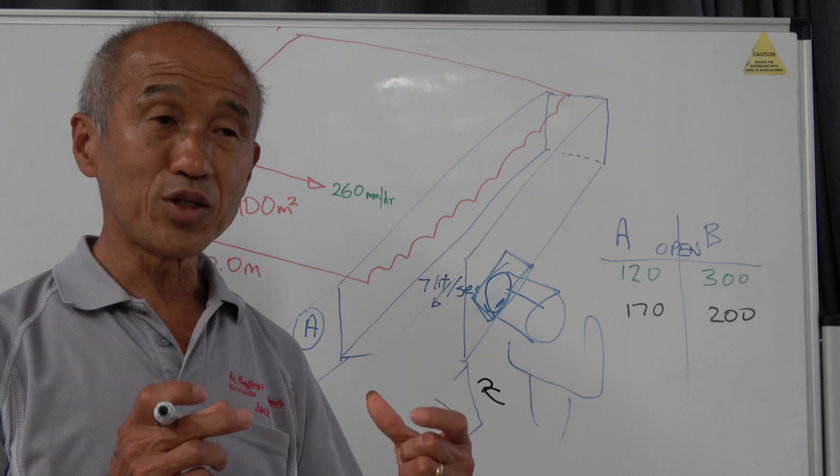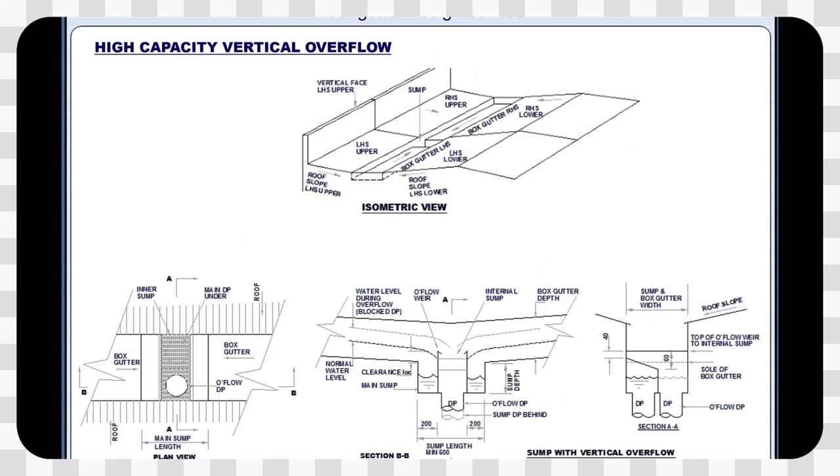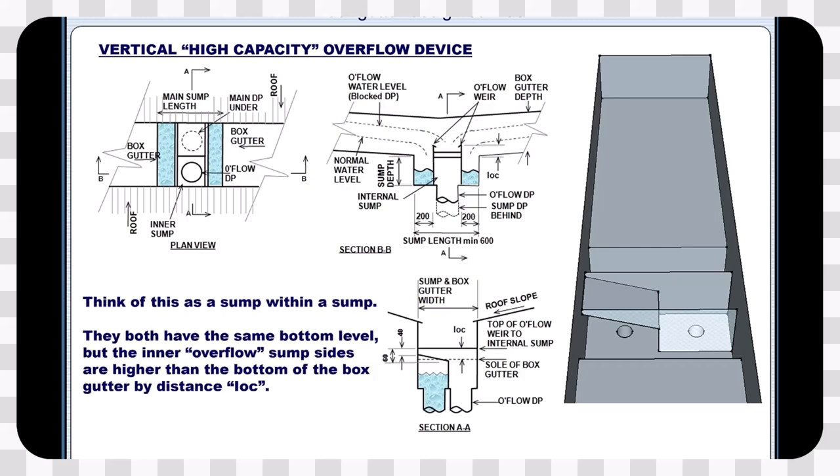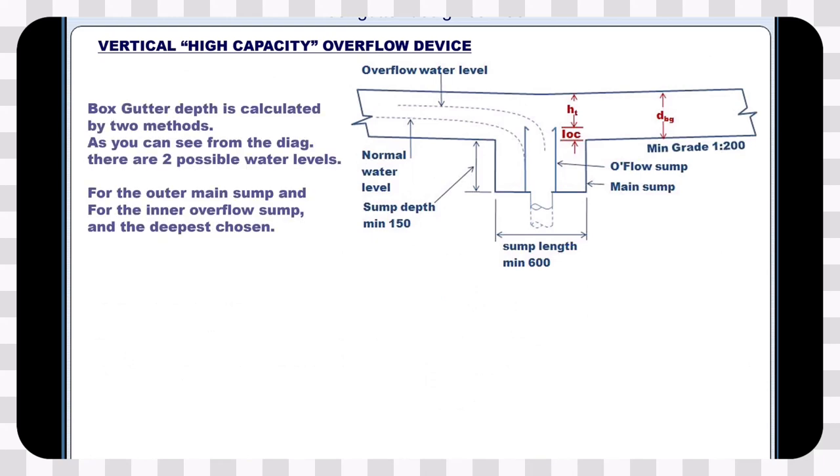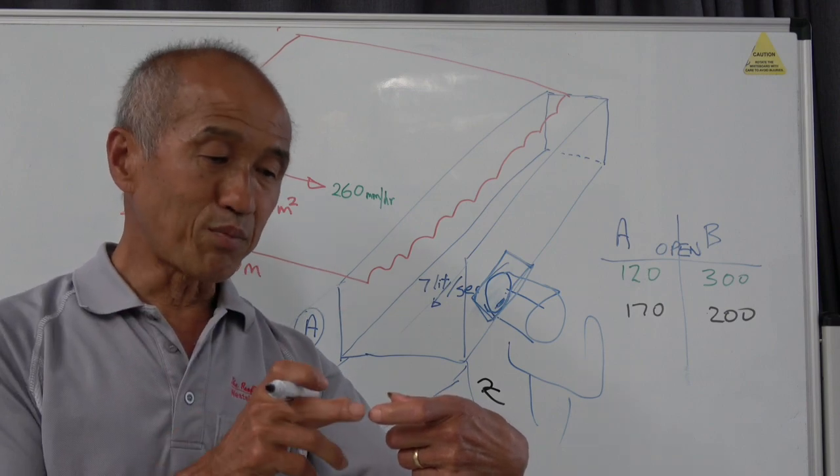And what this means is that you actually put two pipes at the base of the sump. So now you have two downpipes at the base of the sump, and one of them will take in the normal discharge from the box gutter.